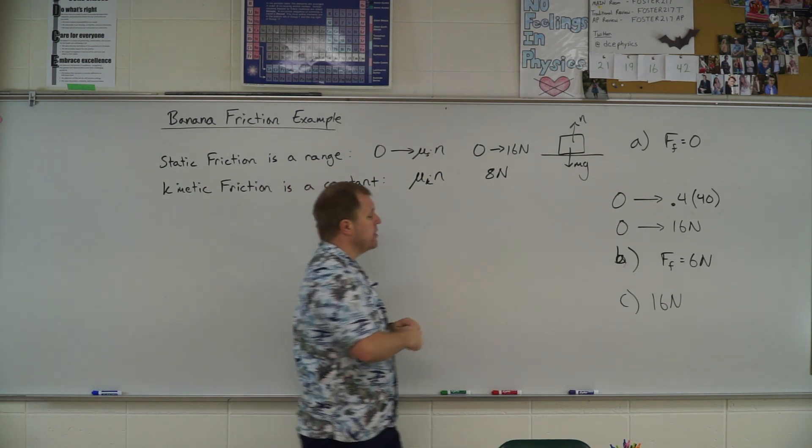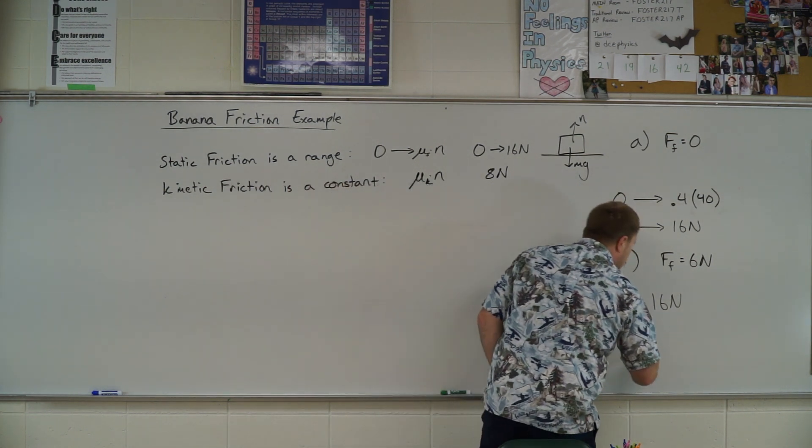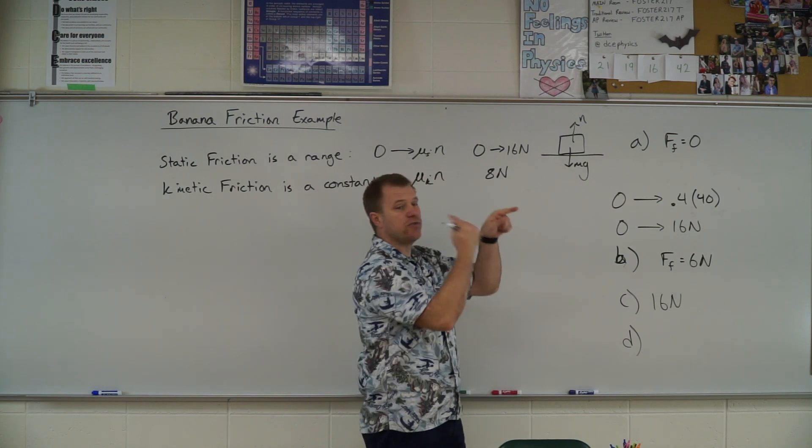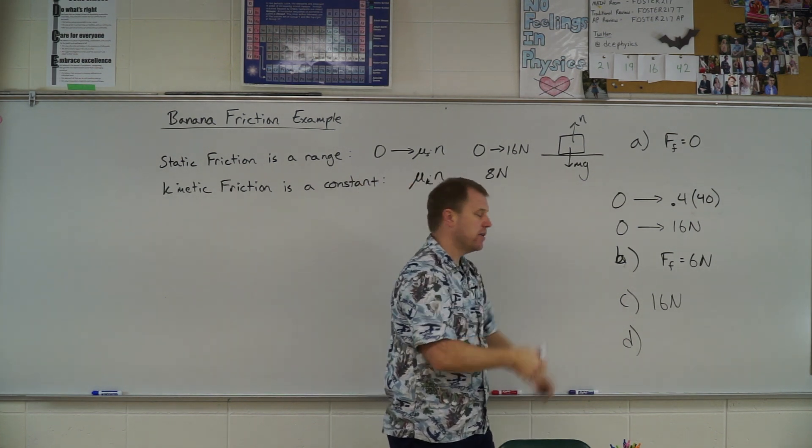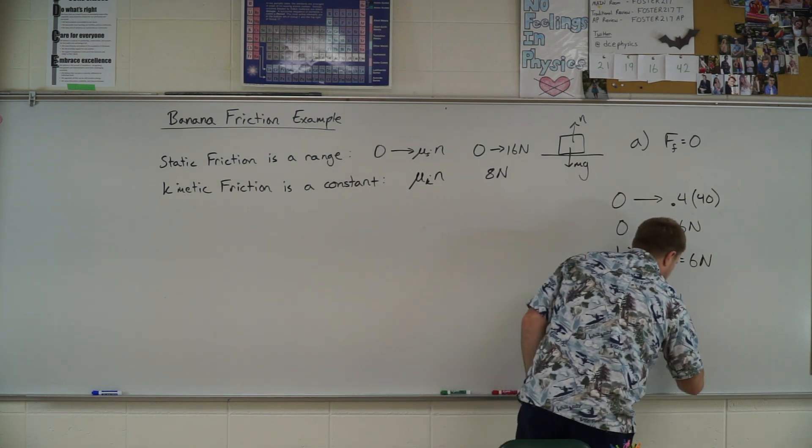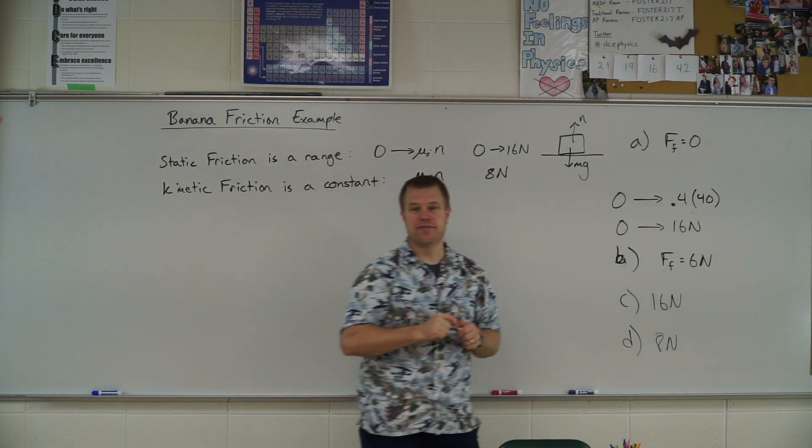And so in part D, once they get it moving, to move it at a constant velocity, those forces again have to be balanced. So if friction is producing 8, the monkey has to produce 8 to keep it moving at a constant velocity.